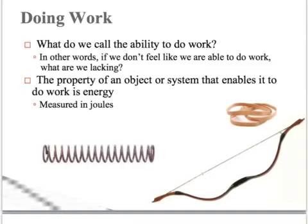Doing work — what do we call the ability to do work? Or if we don't feel like we're able to do work, what do we say we're lacking? Usually that would be energy. The property of an object or system that enables it to do work is called energy. This is measured in joules.